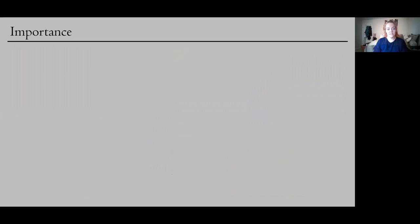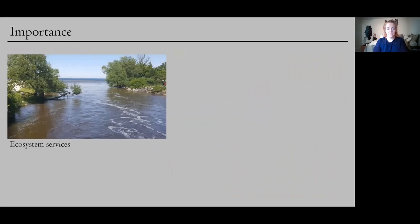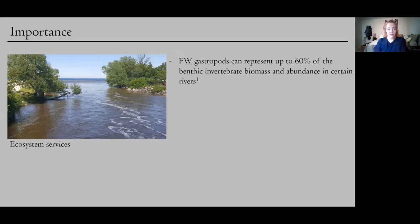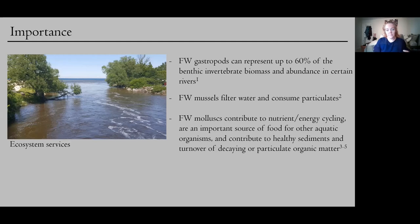And then not only are molluscs and freshwater molluscs culturally and economically important, they're also ecologically very important and provide many ecosystem services that we rely on. So freshwater gastropods can actually represent up to 60% of the benthic invertebrate biomass and abundance in some rivers. And adult freshwater mussels can filter up to 40 liters of water a day. So our freshwater molluscs are really the key recycling and filtration plant of the water that we have. They're consuming dead and decaying organic material and filtering out those particulates from the water, allowing those organic elements and nutrients and energy to get turned back into usable energy and transfer back up the food web. And then they also serve as food, which is important for the health of our ecosystems and contribute to healthy sediments in our rivers.